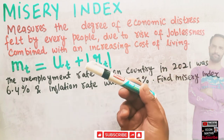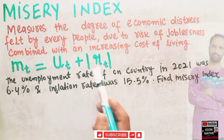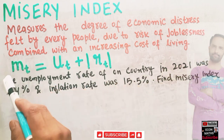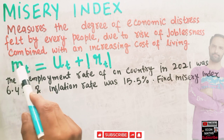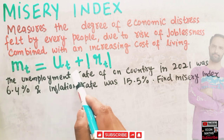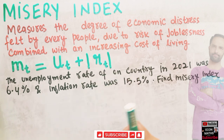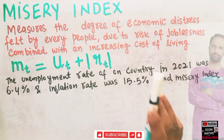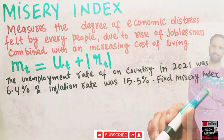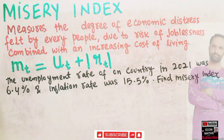The misery index is denoted as MT, which is equal to UT plus πT. Here, UT denotes the unemployment rate and πT (pi subscript T) denotes the inflation rate.